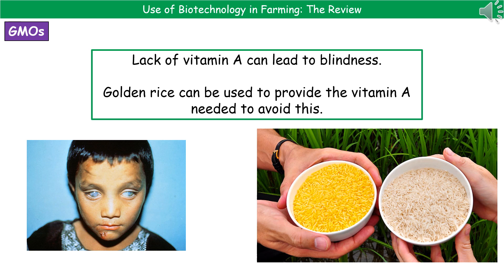We can actually use a substance called golden rice, because this golden rice can be used to provide them with all of the vitamin A they need to prevent the blindness. Golden rice is a genetically modified form of rice, and you can see it at the bottom there on the left hand side — hence its name, golden rice.